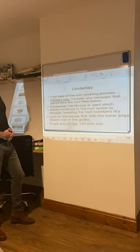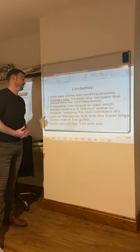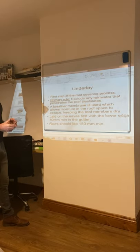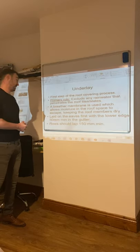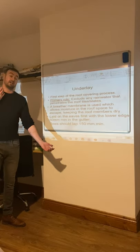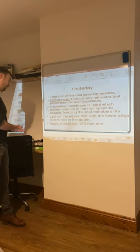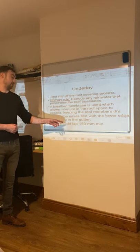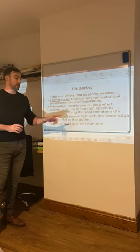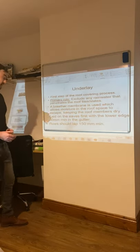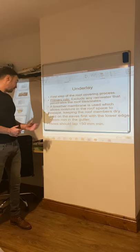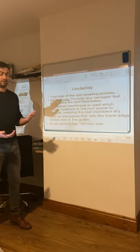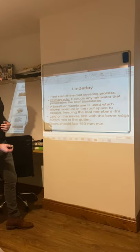The underlay is the very first process of the roof covering. It excludes any rainwater that penetrates the roof or tiles. It's a breathable membrane — it allows air to flow but doesn't allow moisture to come in. It's laid from the eaves first with a lower height of 50mm in the gutter, and each row should lap a minimum of 150mm. A DPC lining is now required to run under the first underlay for extra protection.